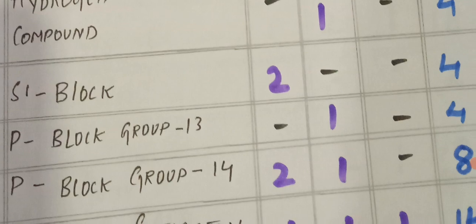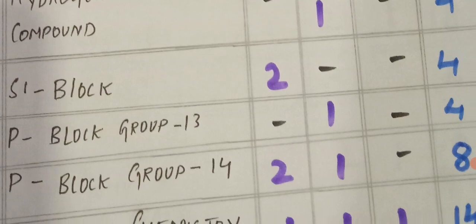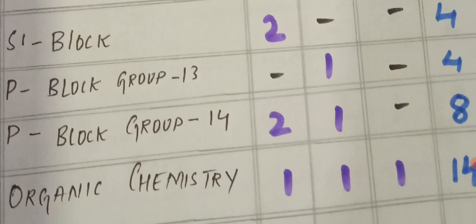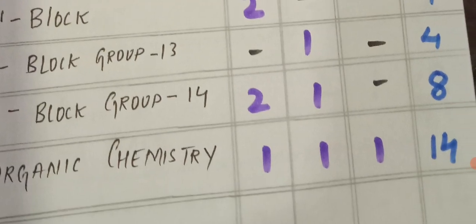P block group 13 elements: 1 SAQ, 4 marks. P block group 14 elements: 2 VSAQs and 1 SAQ, total 8 marks. Organic chemistry: 1 VSAQ, 1 SAQ, and 1 LEQ, total 14 marks.